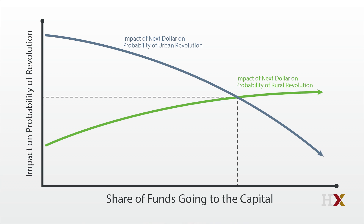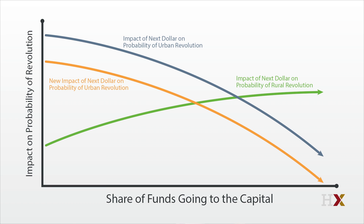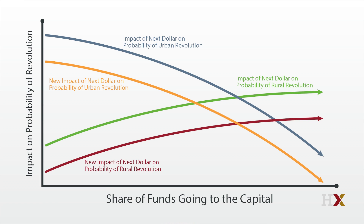But won't this cause people to move to the city? And won't that ultimately create more danger for the dictator? Of course it will, at least if the dictator can't stop migration. So this would shift the curves a bit — the impact of spending in the city on the probability of urban revolt shifts downward, since there is the offsetting impact of attracting more unruly migrants. The impact of spending in the country on the probability of a rural revolt perhaps shifts downward as well. But as long as the migration impact is modest, the basic point remains.